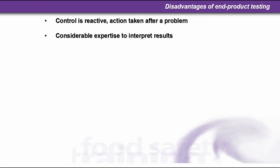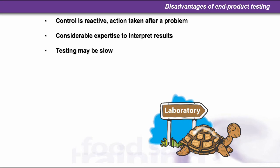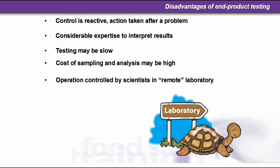Considerable expertise is needed to interpret results. Testing may be slow. The cost of sampling and analysis may be high. Operation is controlled usually by scientists in a remote laboratory or from the main factory or food area.